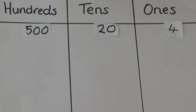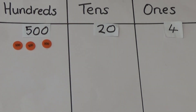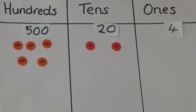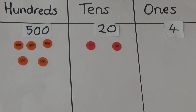Now I am going to show you how to represent 524 on a baseboard. The value of 5 here is 500, that is why I am going to put five 100 counters in the hundreds column. The value of the 2 is 20, so I am going to put two tens counters in the tens column. And the value of the 4 is 4, so I am going to put four ones counters in the ones column.